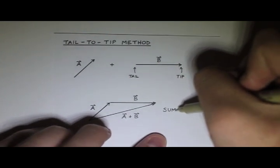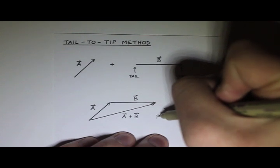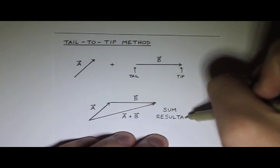And the sum, when you add two vectors together, you also say the sum is the resultant. It just means sum. It's a fancy way of saying the sum of two vectors.